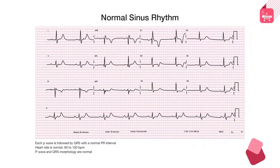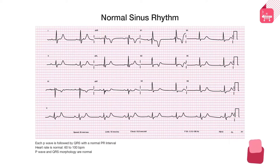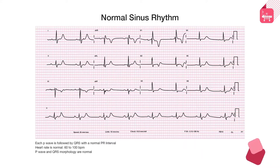Here we can see an ECG showing normal sinus rhythm. In normal sinus rhythm, each P wave is followed by a QRS with a normal PR interval, and the heart rate is normal — classically defined as being between 60 and 100 beats per minute. The P wave and QRS morphology are both normal. A normal P wave morphology tells us the impulse is originating from the sinus node, and a normal QRS morphology tells us the ventricles are getting activated in the usual manner via the conduction system.